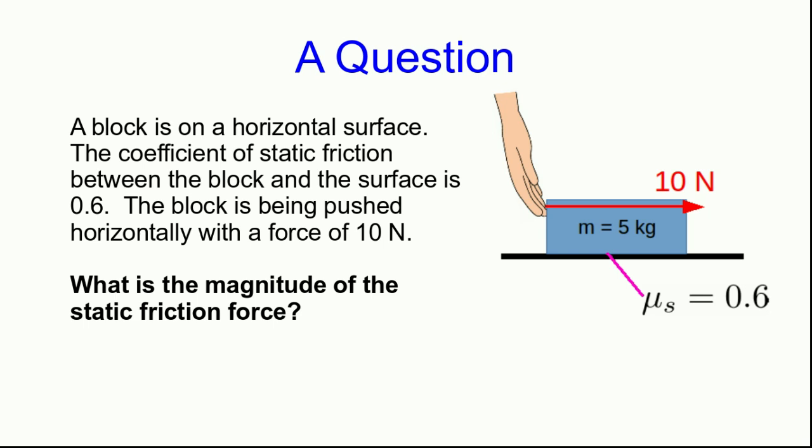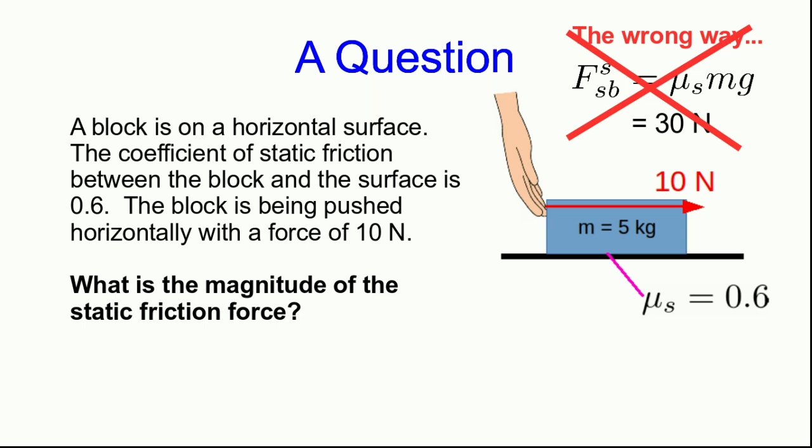Now, I hope you didn't do it the wrong way. The wrong way would have been to say, oh, that static friction is mu s m g, or you might have reasoned mu s times the perpendicular force, and in this case the perpendicular force is m g, and that gives you 30 newtons. No, no, that is incorrect, because the force of static friction is not mu s times the perpendicular force.